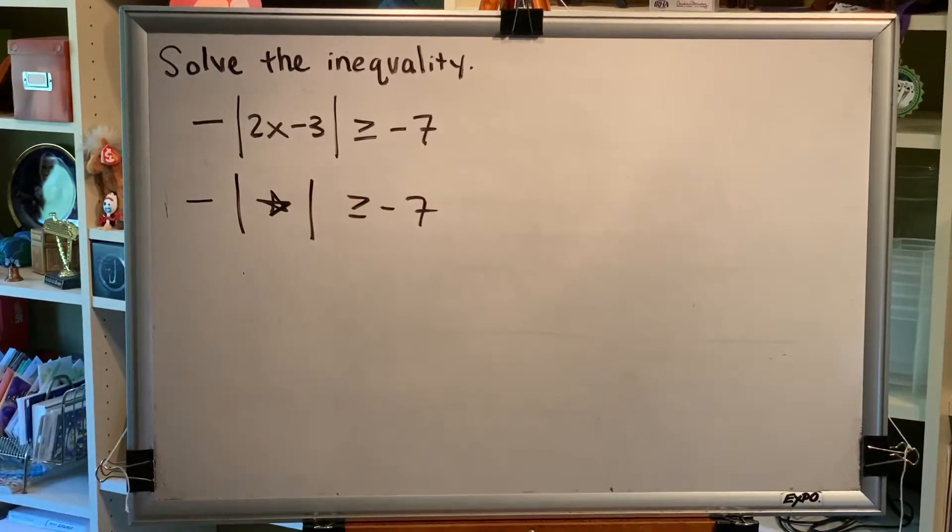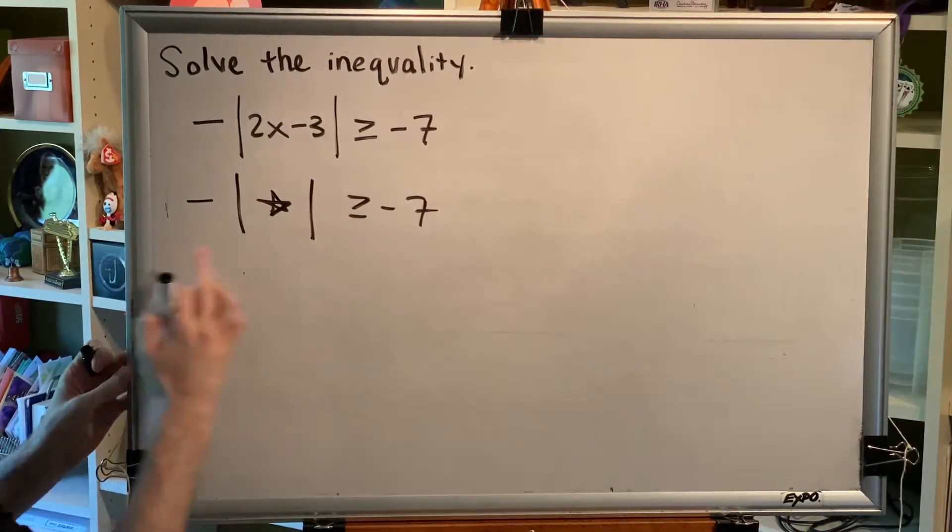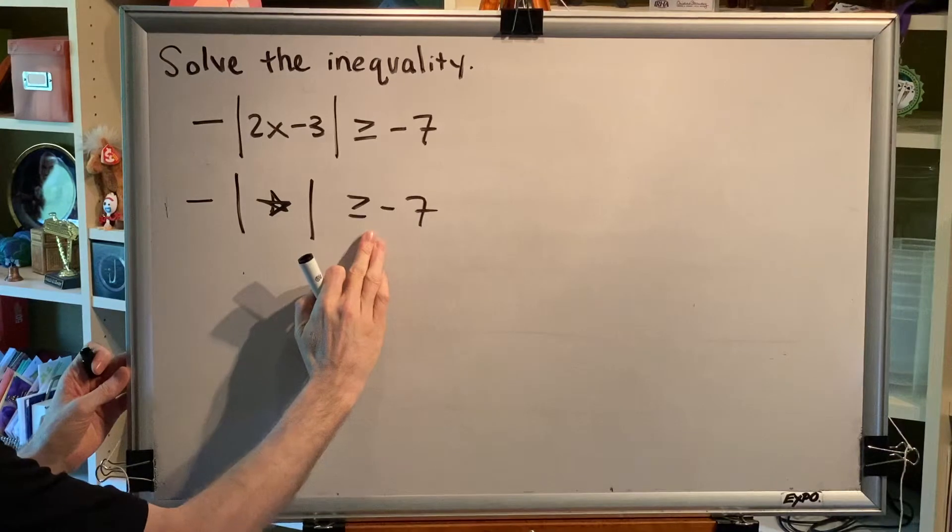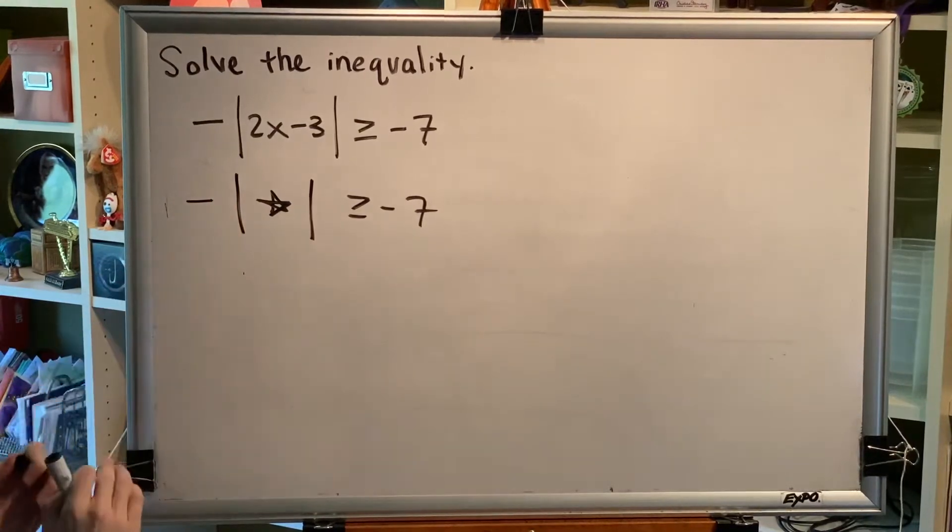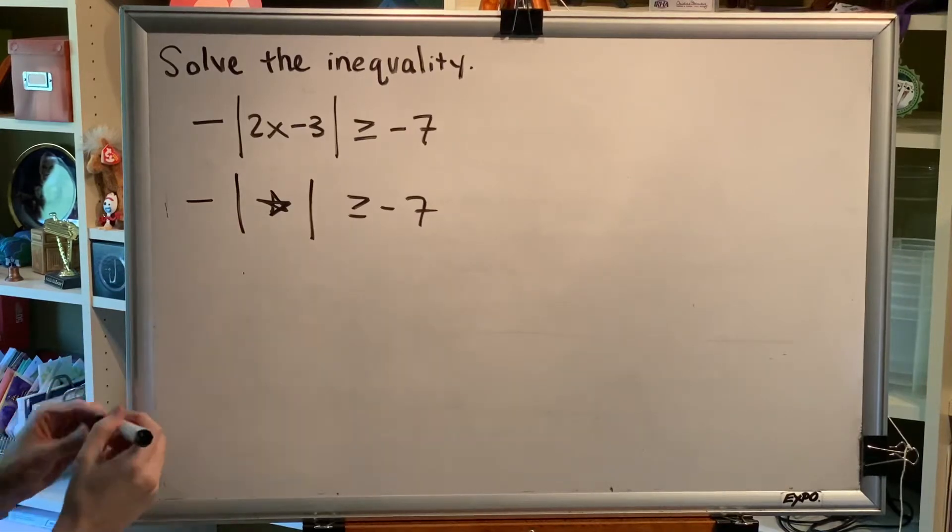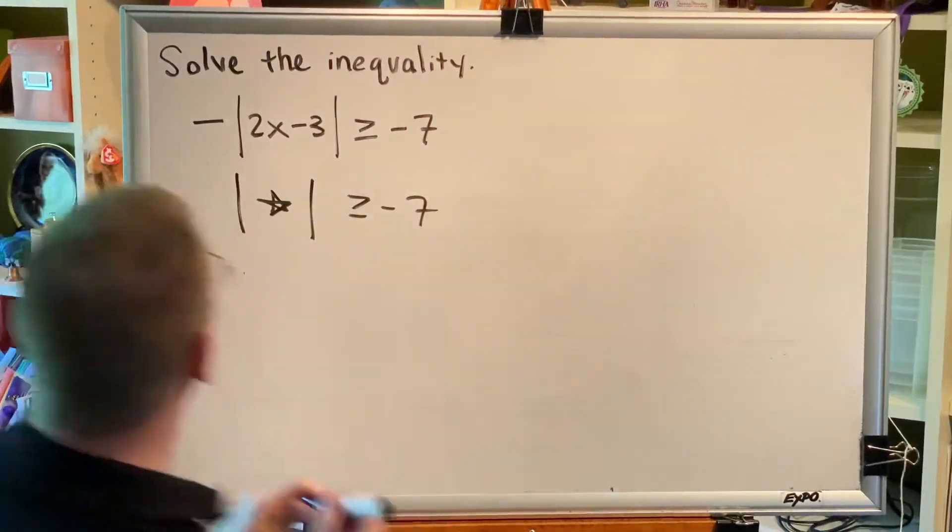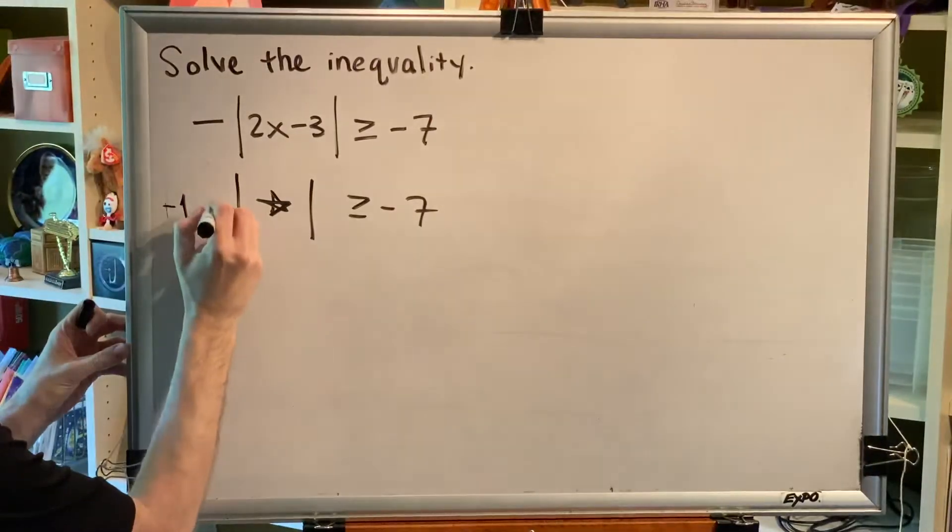Next, get star alone. Well, the only thing that's on the left side of the equality outside the absolute value bars is this negative. And we know that this is actually the hidden number negative 1. In fact, if I wanted to, I could replace this little hyphen with negative 1 times.